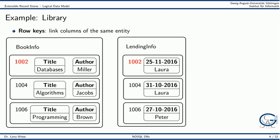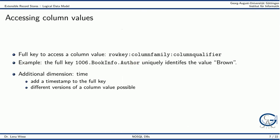Data are sorted by the row key. To access values in a column, we have to use the full key. The full key consists of the row key, the column family, and the column name or column qualifier. As an example, the full key 1006 BookInfo author uniquely identifies the value brown.